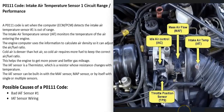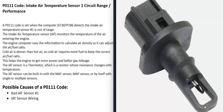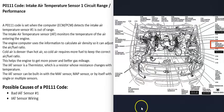The intake air temperature sensor, or IAT sensor, monitors the temperature of the air going into the engine and reports this information back to the computer. The computer uses it to adjust the air-fuel ratio mixture going into the cylinders, since cold air is denser than hot air. When the air is cold, the engine needs more fuel, so the IAT sensor reports the air temperature back to the computer.